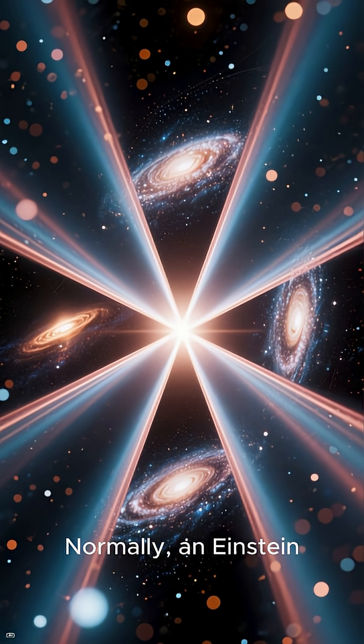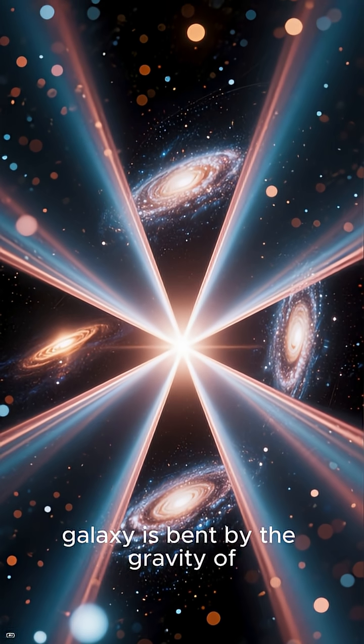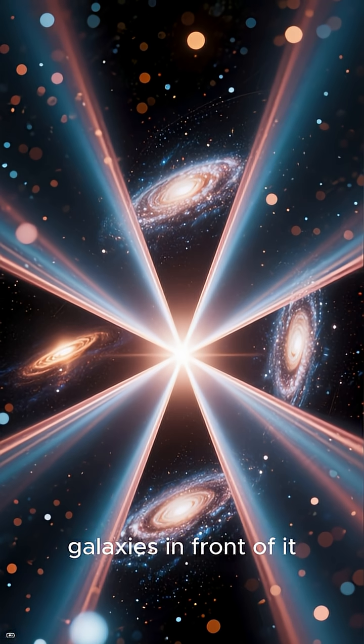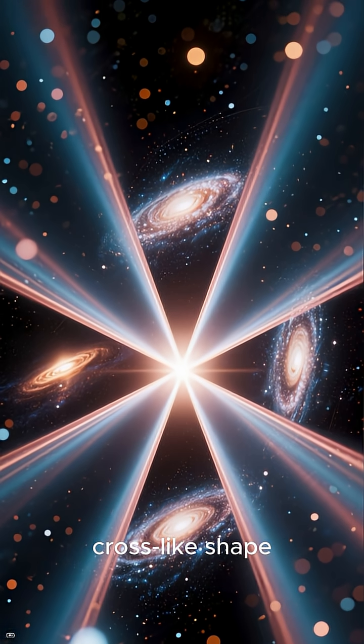Normally, an Einstein cross occurs when the light from a distant galaxy is bent by the gravity of galaxies in front of it, creating four images in a cross-like shape.